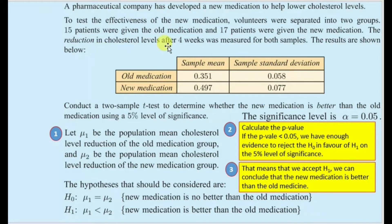15 patients were given the old medication and 17 patients were given the new medication. The reduction in cholesterol levels after four weeks was measured for both samples, and the results are shown in the form of a table. The table shows the sample mean and standard deviation for both the old and new medication groups, and we will use both these figures to do the calculation.